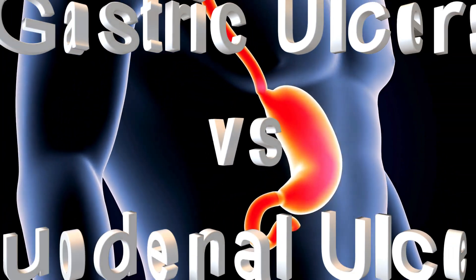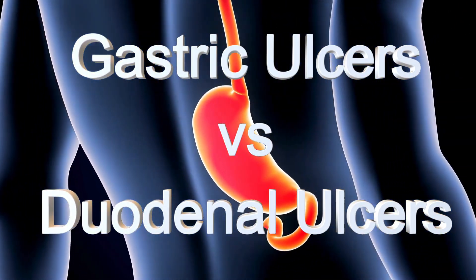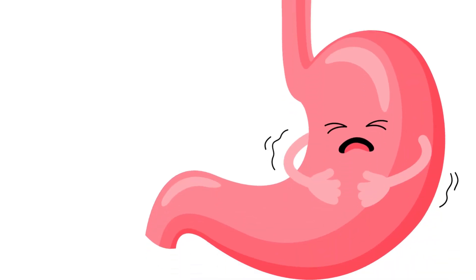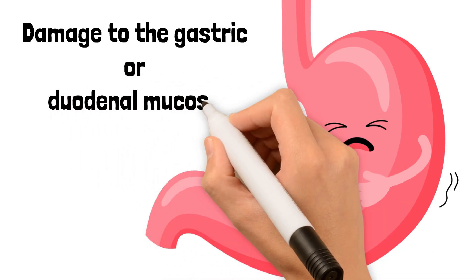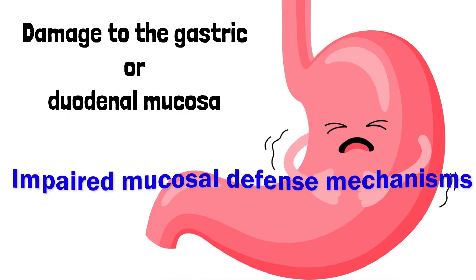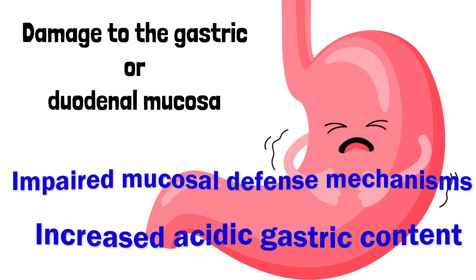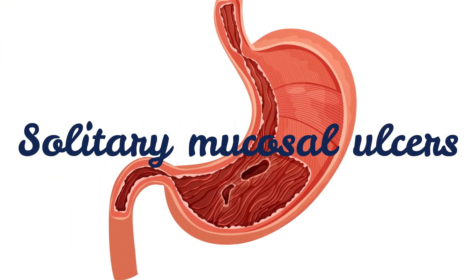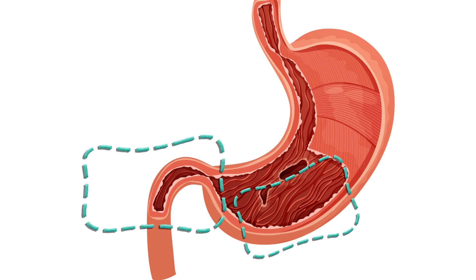In this video we'll talk about the differences between gastric ulcers and duodenal ulcers. Peptic ulcer disease results from damage to the gastric or duodenal mucosa caused by impaired mucosal defense mechanisms or increased acidic gastric contents. These are solitary mucosal ulcers involving the proximal part of the duodenum or the distal stomach.